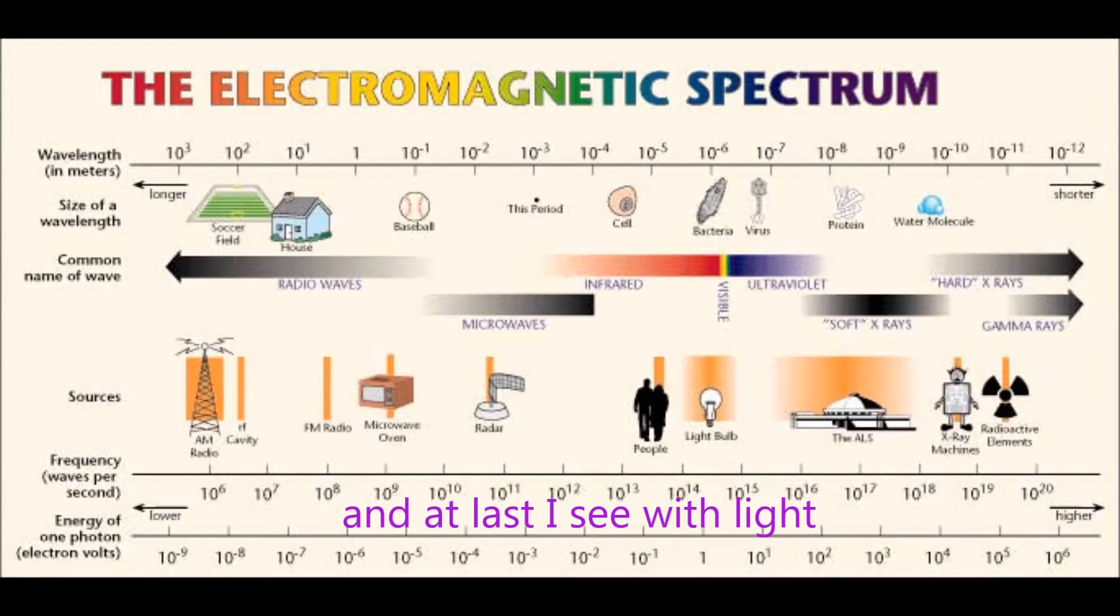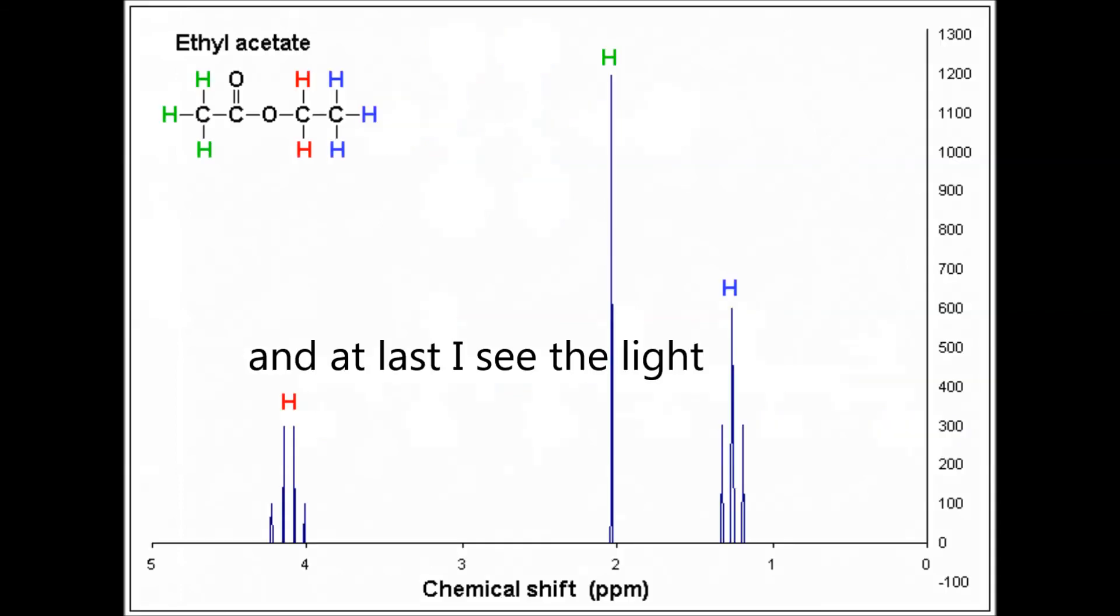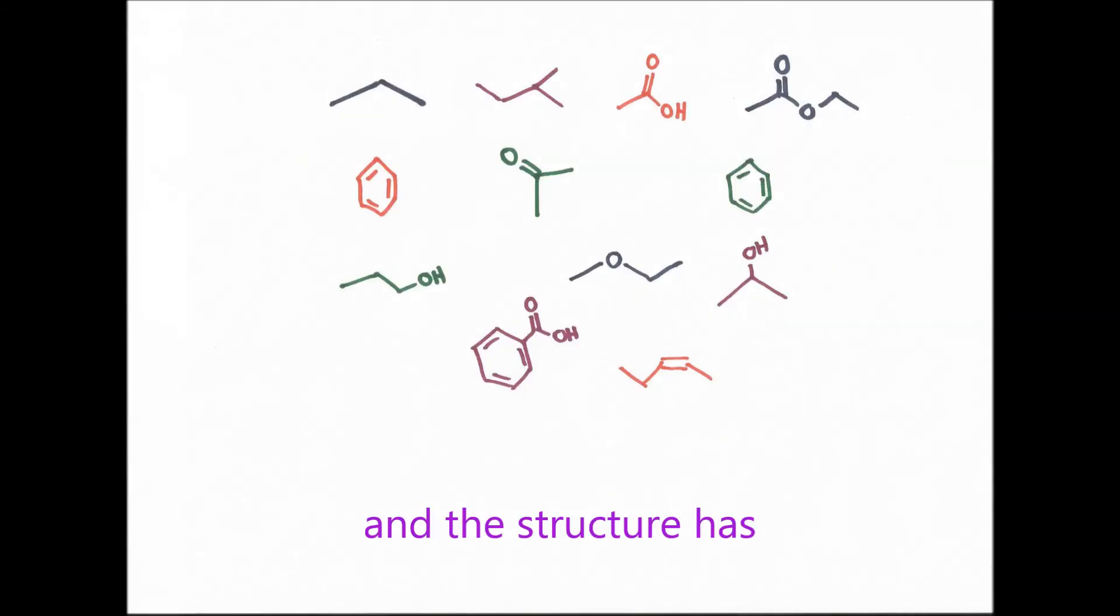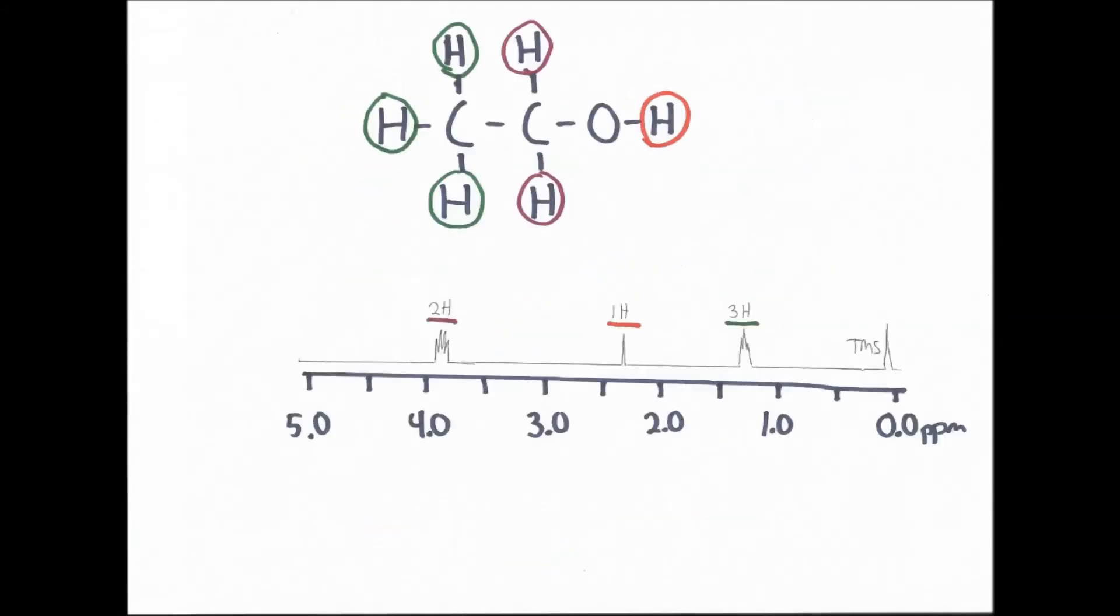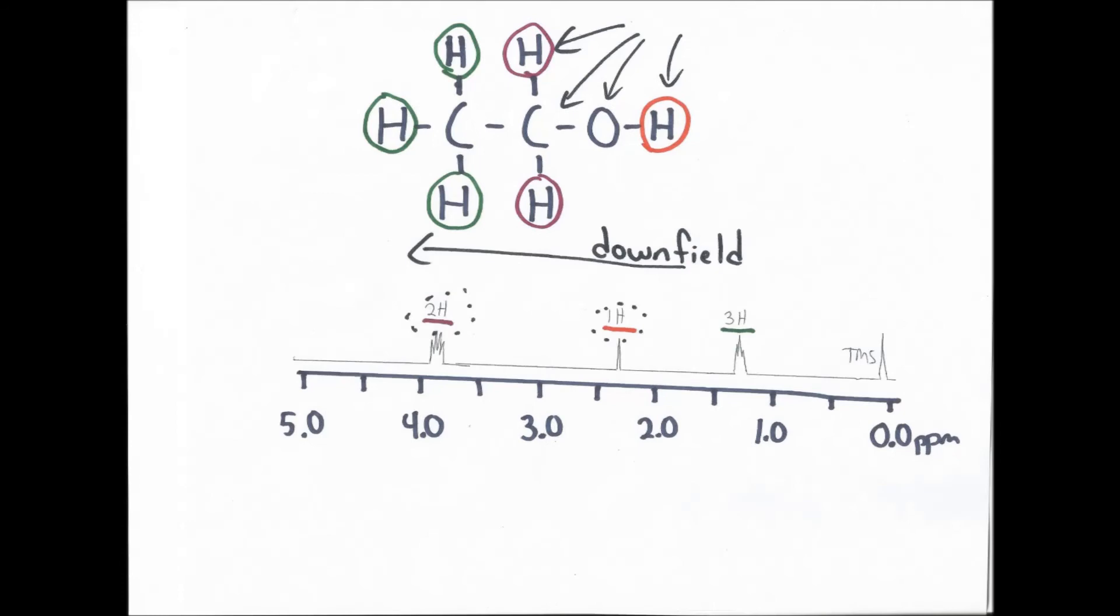And at last I see with light, TMS has somehow shifted, and at last I see the light, and the structure has a clue, and it's electronegative and bright, and the peak is downfield shifted.